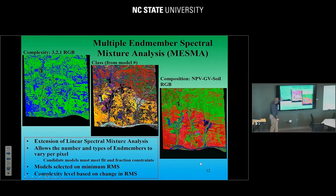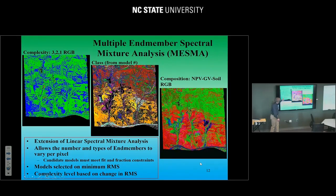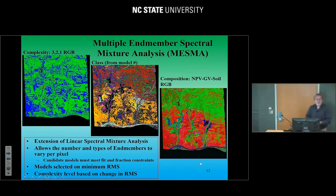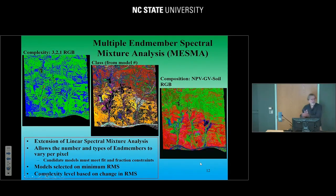We constrain MESMA so candidate models must fit the data and meet fractional constraints — meaning they have to be physically reasonable fractions between zero and a hundred percent. Any one pixel can be modeled by more than one model — you might have a pixel modeled by 15 different ones — so we select the model that best fits the data, the one with the minimum RMS. We can also model different levels of complexity: is it best modeled with two, three, or four end-members? The way we decide is how much improvement we see in the fit — if it's really good at two end-members and doesn't improve from three to four, why go more complex?